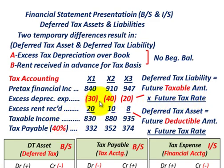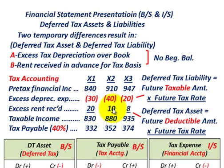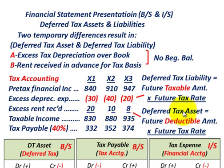Our tax rate is 40% over those three years. For excess depreciation, it's a future taxable amount — you're taking the full $30,000 depreciation in year one and won't be able to deduct it in subsequent years. Our second temporary difference is excess rent received: $20,000 in year one, $10,000 in year two, and $8,000 in year three. This is a deferred tax asset — you pay taxes on it in the current year, so in subsequent years you won't have to pay tax on it again. The deferred tax asset equals the future deductible amount times the future tax rate.